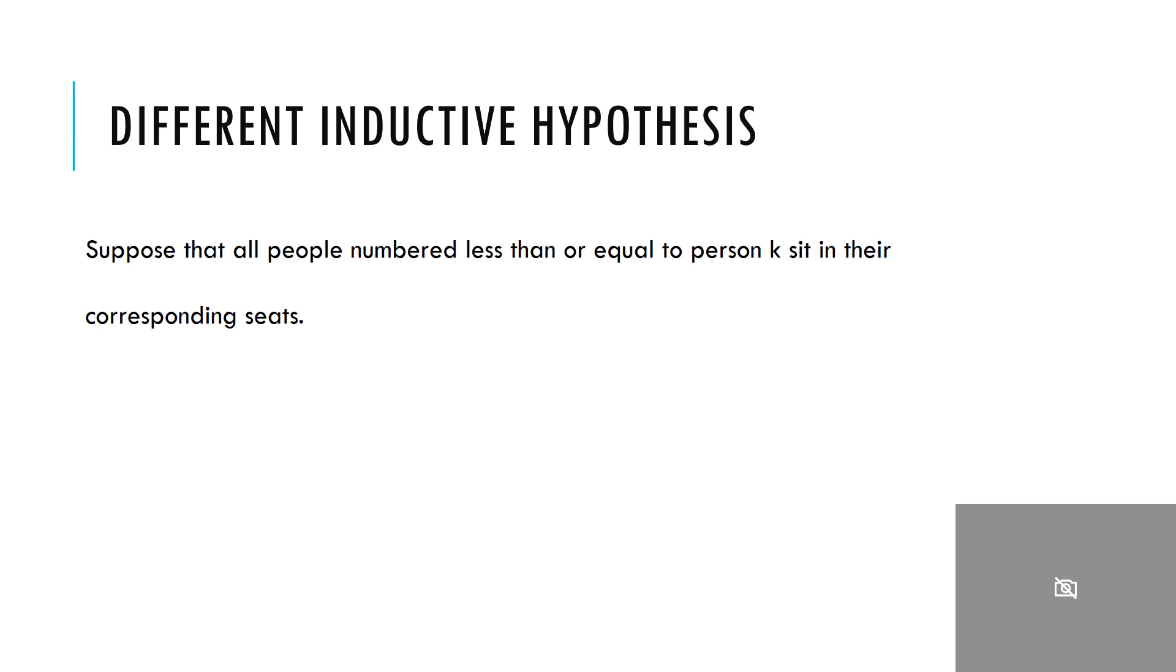So person number two sits in seat number two, person number twenty sits in seat number twenty all up to person k.